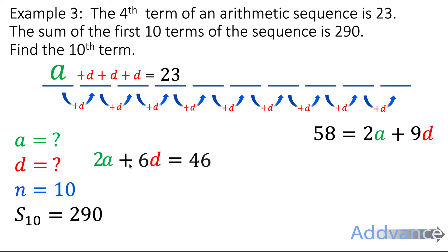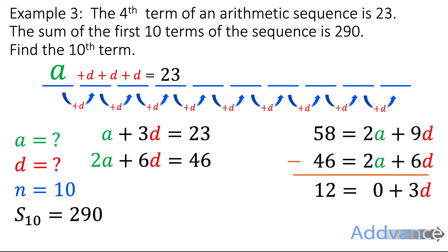I'm going to start by multiplying by 2. And that gives us a 2A. And I do that because I've got 2A over here and I can compare them now. I write them underneath each other and I subtract to cancel out the 2As. 58 minus 46 is 12. 2A minus 2A is 0. And 9D minus 6D is 3D.